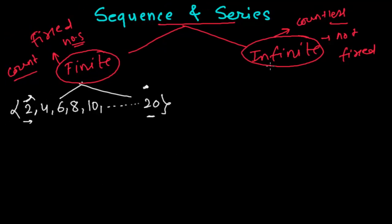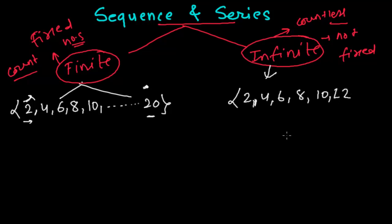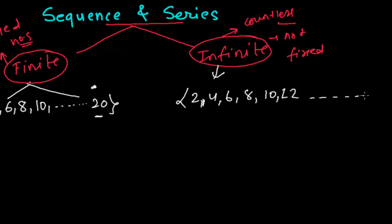Now let me give an example of an infinite sequence using even numbers: 2, 4, 6, 8, 10, 12, and so on. There is no ending point — we don't know where it ends. It's up to infinity, which is why we call it infinite. It's countless, and this kind of series is known as an infinite series or infinite sequence.